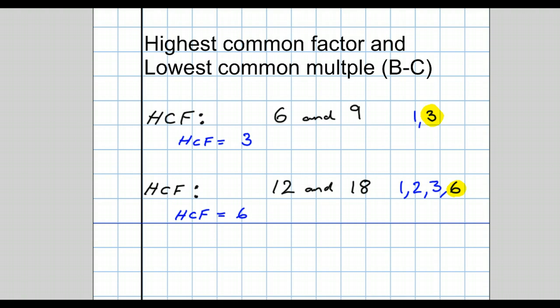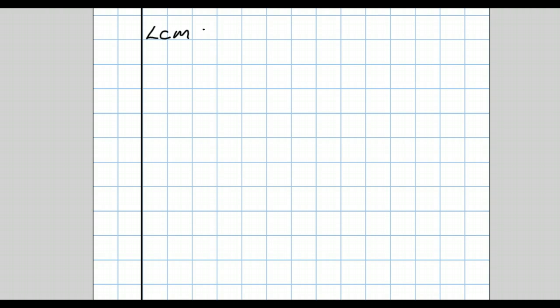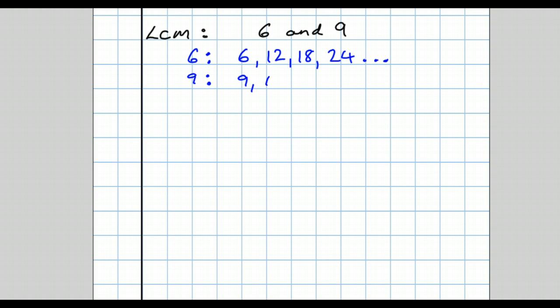Now let's look at the lowest common multiple. The lowest common multiple. Here's the first way — it's rather laborious — of finding the lowest common multiple of 6 and 9. You write out all the multiples of 6: 6, 12, 18, 24. You can't write them all out, so you stop after a few; 4 or 5 is sufficient. Then you write out the multiples of 9: 9, 18, 27, 36, and you stop. Hopefully you'll have spotted that the first, and hence the lowest, multiple that they have in common is 18.